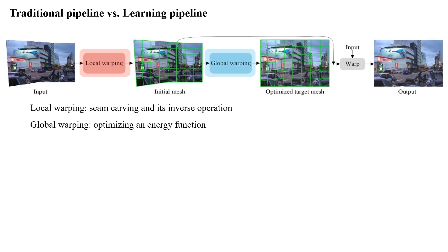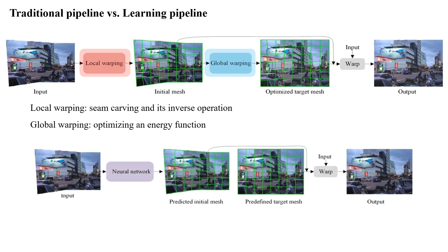In this work, we propose a compact one-stage pipeline for deep rectangling. Particularly, we define the target mesh to be rigid, and the only thing the neural network should do is to predict the initial mesh. In this manner, we convert the rectangling problem into a regression problem.